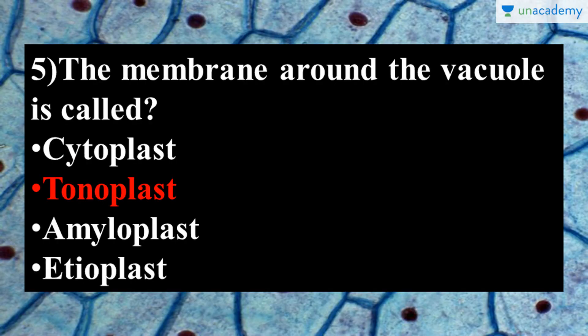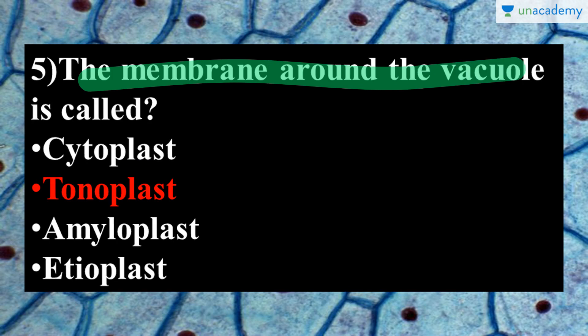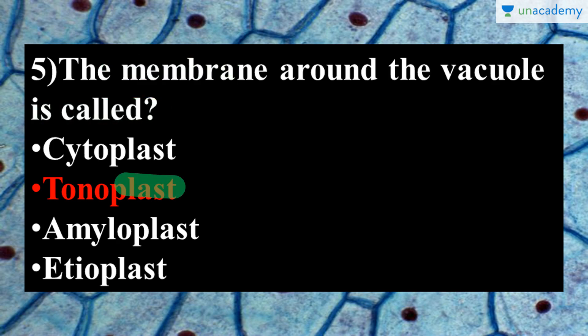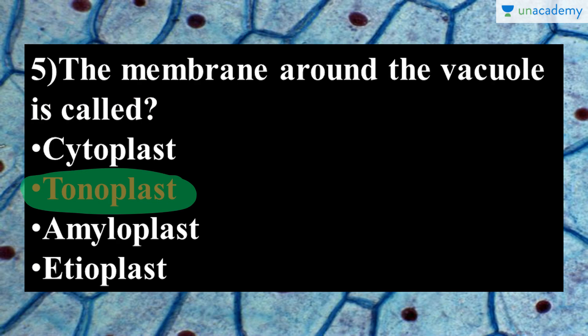The next question is: the membrane bound around the vacuole is called what? I have talked separately about vacuoles in the plant cell section. The outermost membrane around the vacuole is known as tonoplast. So the answer is tonoplast.